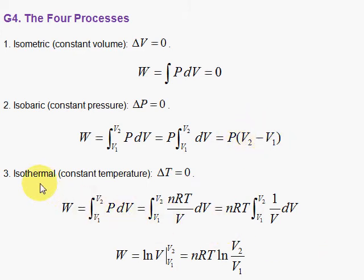The next process is an isothermal process, one at constant temperature. On a weather map, an isotherm is a line that has the same temperature along the line.